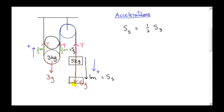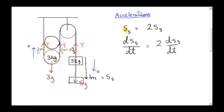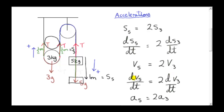Calling the distance moved by the five kilogram mass S₅ and the distance moved by the three kilogram mass S₃, we see that S₅ is twice the distance moved by the three kilogram mass. Taking the derivative with respect to time gives us velocity, so the velocity of the five kilogram mass is twice the velocity of the three kilogram mass at any instant. Taking the rate of change again gives acceleration, so the acceleration of the five kilogram mass is twice the acceleration of the three kilogram mass.